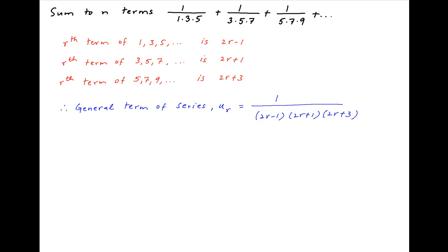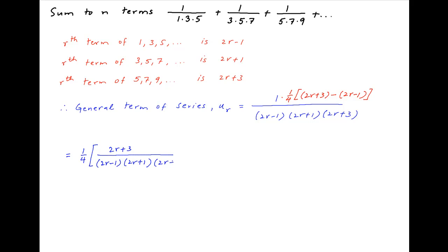Now multiply the numerator with the expression (2r+3) minus (2r−1), which equals 4. Therefore divide by 4 as well. So ur can be expressed as a difference of two terms: the first term is (1/4) times (2r+3) divided by (2r−1)(2r+1)(2r+3), and the second term is (1/4) times (2r−1) divided by (2r−1)(2r+1)(2r+3).